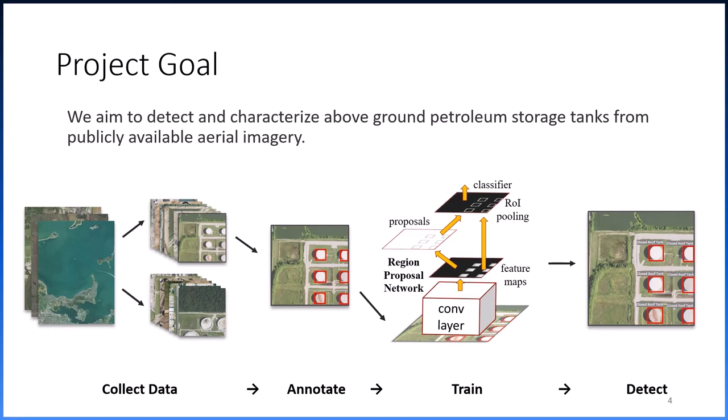Historically, data on tank farms are limited, inadequate, and costly. However, pertinent information can be inferred from overhead imagery. We aim to detect and characterize above-ground petroleum storage tanks from publicly available aerial imagery using deep learning algorithms. This provides the necessary information to evaluate human and environmental health risks posed by petroleum released during natural hazards.